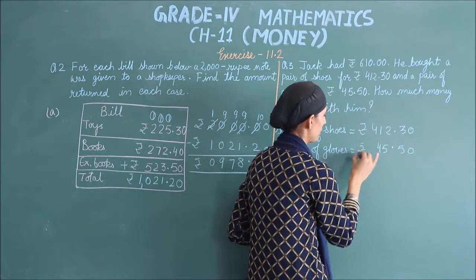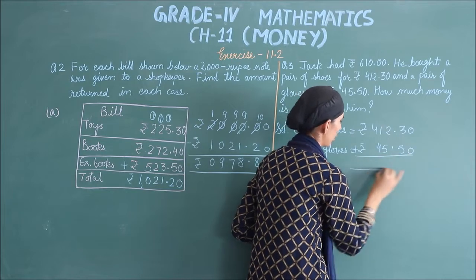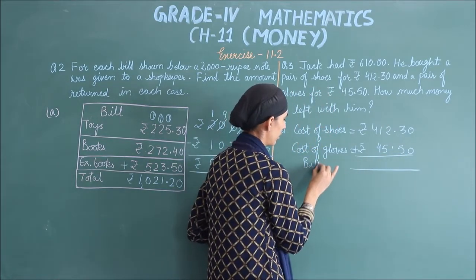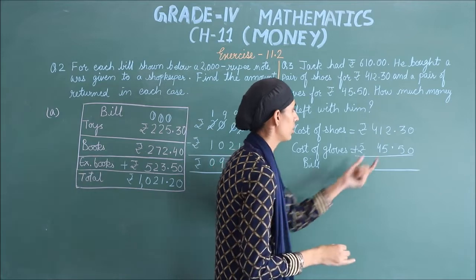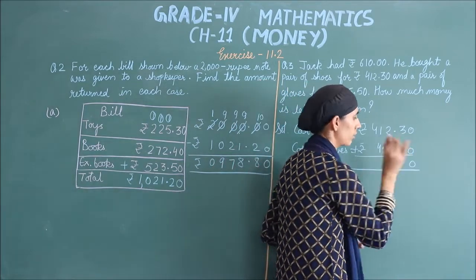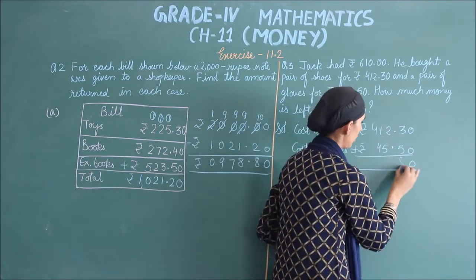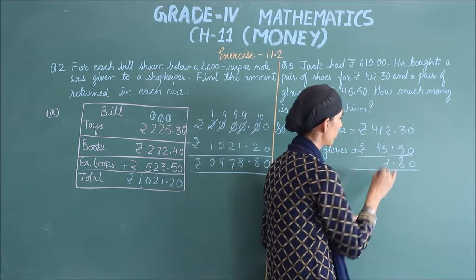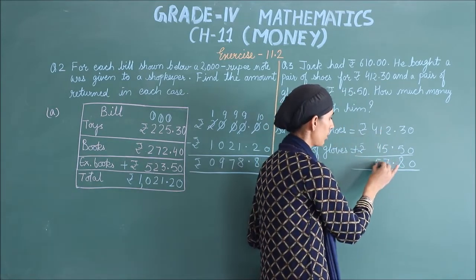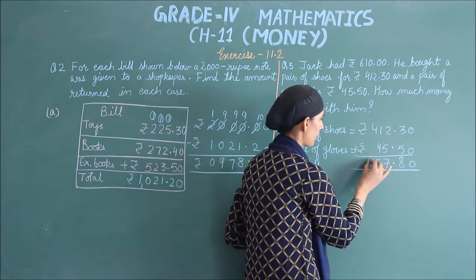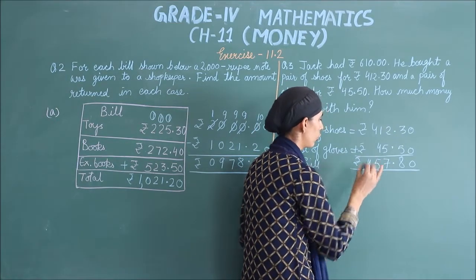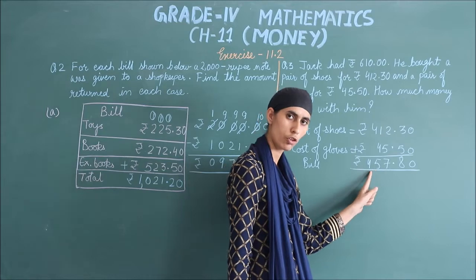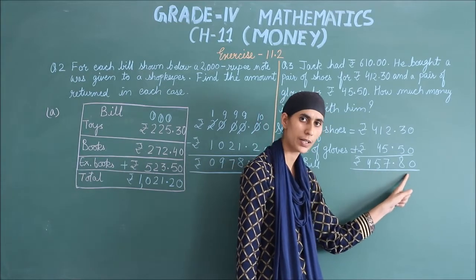Now add them to find the total bill: 0 plus 0 is 0; 3 plus 5 is 8; 2 plus 1 is 7 — wait, then 4 plus 1 is 5, and next 4. So the total bill is ₹457.80. Now subtract this from the total money Jack had, which is ₹610.00.